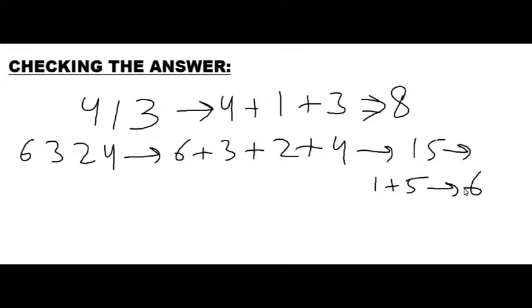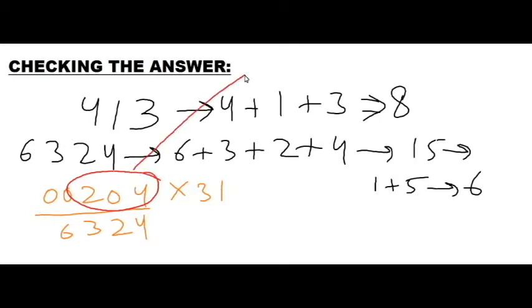So there is a shortcut in that, how to get the digit sum immediately. But first let's say we have already multiplied 204 by 31, and our answer is 6324. And we want to know if we have done it correctly or not. So first we have to get the digit sum of 204. 2 plus 0 plus 4 is 6.